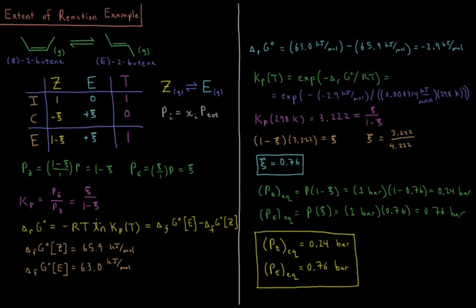Notice that the Gibbs energy of formation of the product is lower than that of the reactant, so the standard Gibbs energy of reaction was negative, meaning the equilibrium constant was greater than 1. As a result, the product ends up being more favored than the reactant due to its lower standard Gibbs energy of formation.